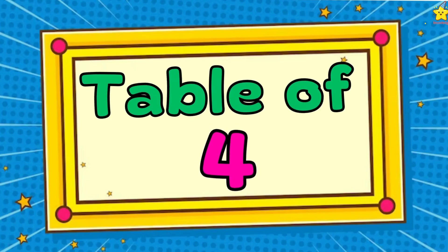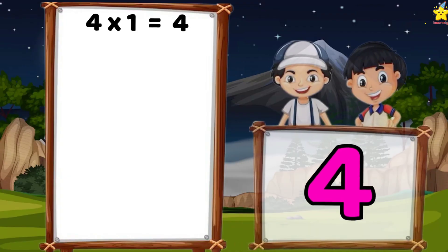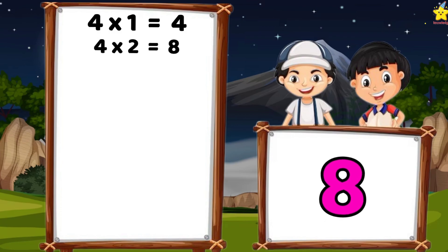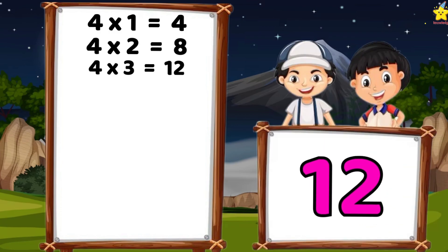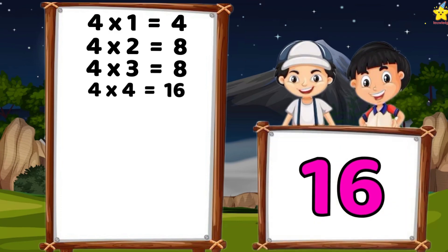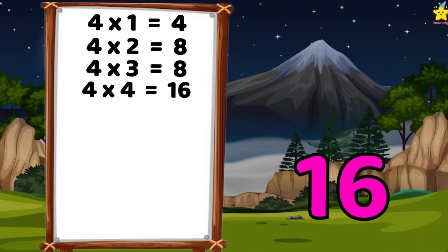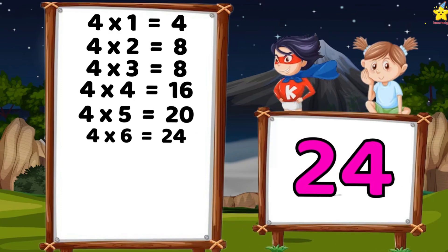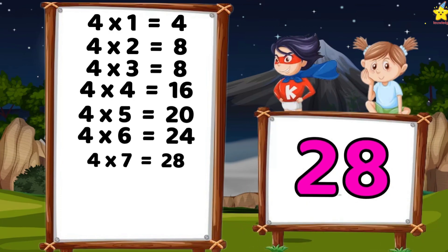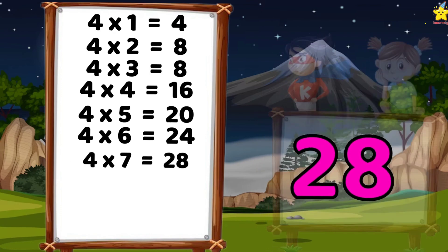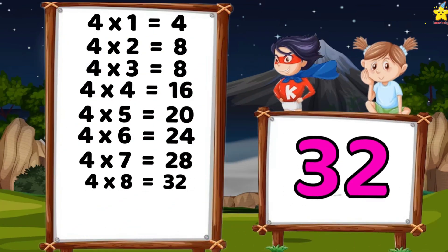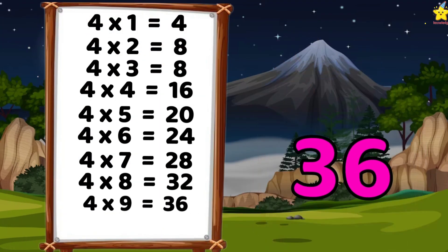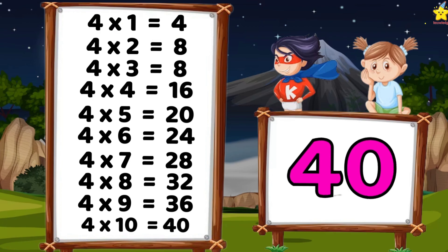Table of four. Four times one is four. Four times two is eight. Four times three is twelve. Four times four is sixteen. Four times five is twenty. Four times six is twenty-four. Four times seven is twenty-eight. Four times eight is thirty-two. Four times nine is thirty-six. Four times ten is forty.